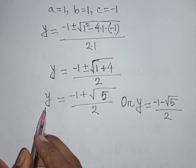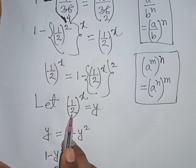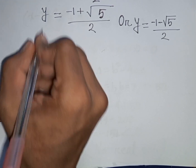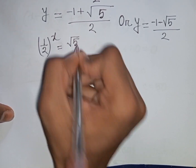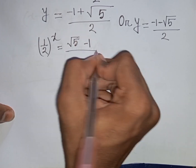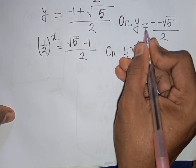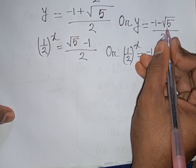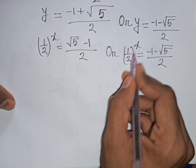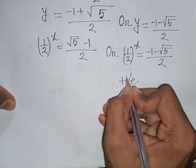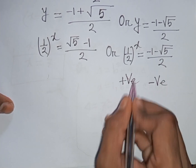Remember that y equals (1/2)^x. Since (1/2)^x is always positive for any number x, but (minus 1 minus √5)/2 is negative, a positive value cannot equal a negative value. Therefore, this second solution is rejected.